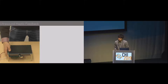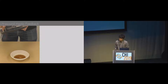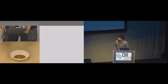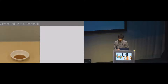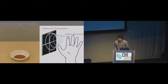Ultrasound haptic feedback is the core technology of mid-air haptics. By controlling transducers to match the phases of the ultrasound waves at a certain point in the air, a high sound pressure point is generated when the sound focus reaches that location. When the focus is interrupted by human skin, haptic stimulation is presented based on acoustic radiation pressure.